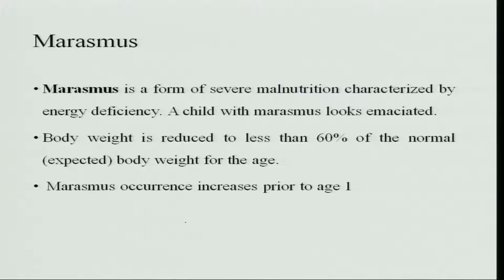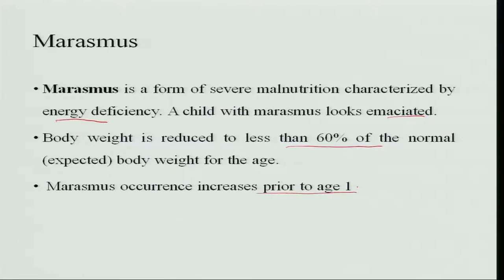Marasmus is a form of severe malnutrition characterized by severe energy deficiency. The child with marasmus looks very emaciated — body weight is reduced to less than 60 percent of the normal or standard body weight expected for that age. Marasmus occurs prior to age one, commonly when a second child is born and the mother weans the first baby early, causing the child to become marasmic.